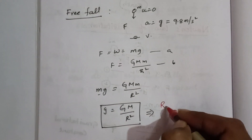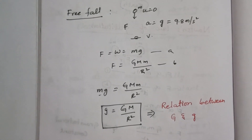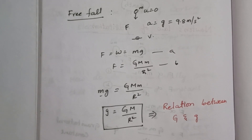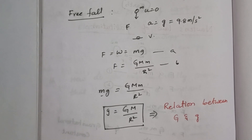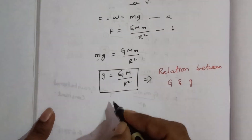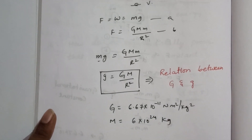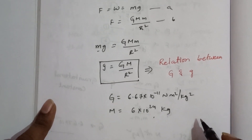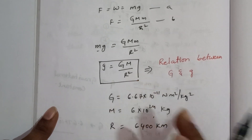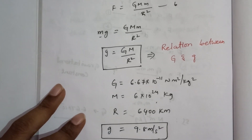This is the relation between capital G and small g: small g equals G M divided by R squared. Substituting G equals 6.67 times 10 to the power minus 11, mass of Earth M equals 6 times 10 to the power 24 kg, and radius of Earth R equals 6400 kilometers, we get g nearly equal to 9.8 meters per second squared.